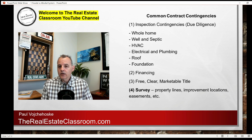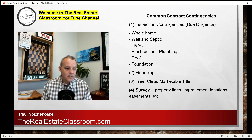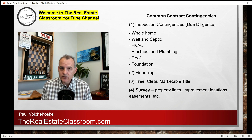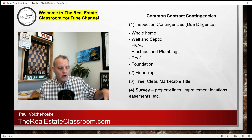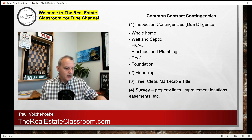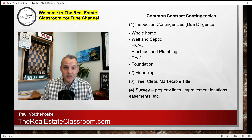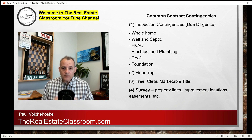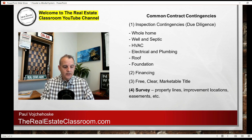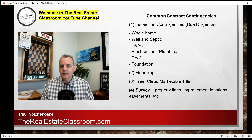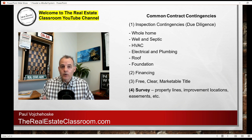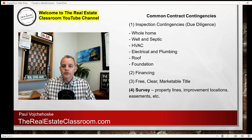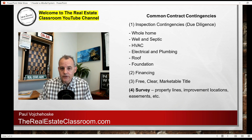Number four is a survey. Many times the buyer wants to have a survey done. A survey is a process where you identify precisely where the boundary lines are and where the improvements — such as houses and barns — are located in conjunction with those boundary lines. It also identifies easements and utility easements on the property. The contingency typically reads: contingent upon a satisfactory survey. If there are boundary line issues or an easement in a particular place that would prevent you from building a barn, that impacts your decision to buy, and it allows you as a buyer to get out of the contract free and clear of penalty.